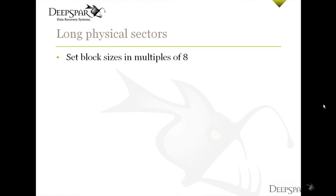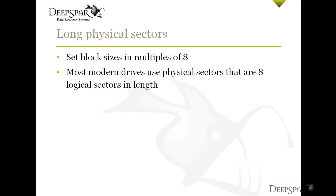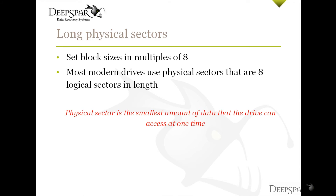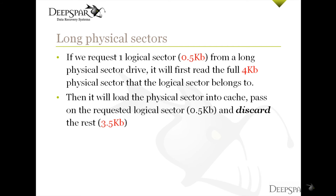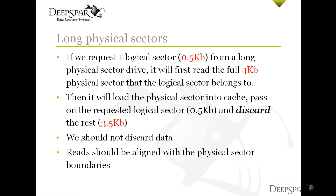It's a good idea to get used to setting block sizes in multiples of 8, because many modern drives use physical sectors that are 8 logical sectors in length. A physical sector is the smallest amount of data that the drive can access at one time. So if we request one logical sector, or half a kilobyte, from a long physical sector drive, it will first read the entire 4 kilobyte physical sector that the requested logical sector belongs to, then pass on the requested logical sector through the bus, and discard the other 7 logical sectors that were also read. In data recovery, we do not want to discard any recovered data, so it makes much more sense to align our read commands with the physical sector boundaries of the drive to ensure we actually retrieve all the data that the hard drive reads.